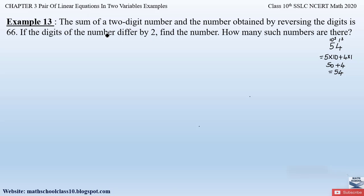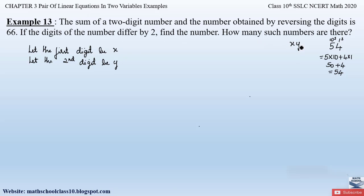Since we don't know the two digits, let the first digit be x and the second digit be y. Since x is in the 10's place and y is in the 1's place, the number can be written as 10x + y. Reversing the digits gives us yx, where y is now in the 10's place and x in the 1's place, so the reversed number is 10y + x.